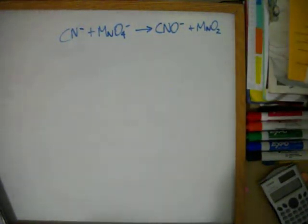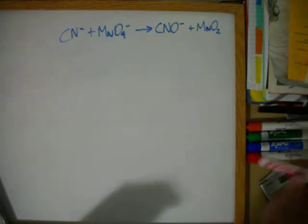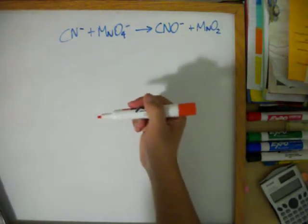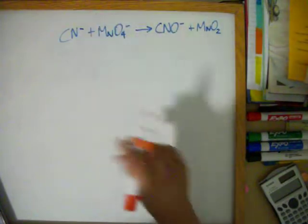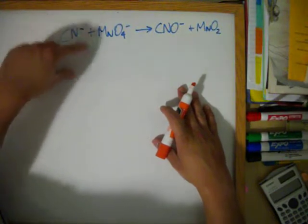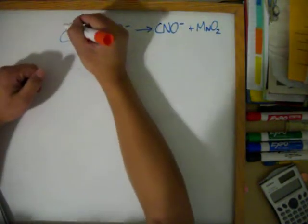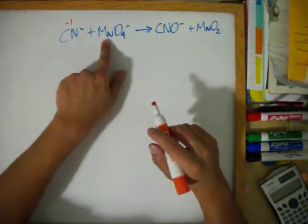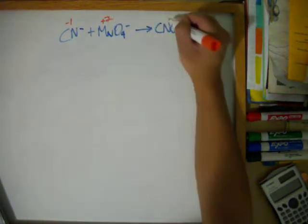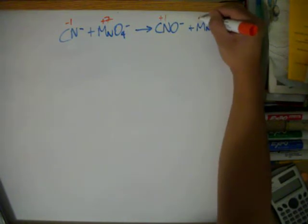Hey guys, this is an example of a basic redox reaction. Let's start off with the first step I showed you in the last video. The first step was to take the charges of each element — actually, I should have said ions, because cyanide is not an element, it's an ion. We get negative 1 for that. Then this is x minus 8 equals negative 1, so this is a plus 7. And this is x minus 1 equals negative 1, so this is a plus 1, and this is a plus 4.